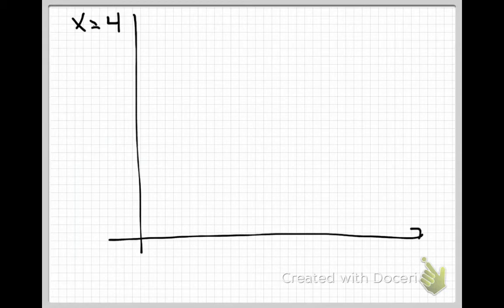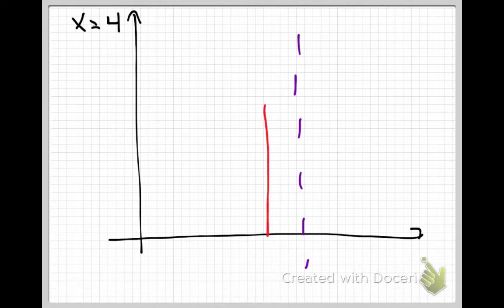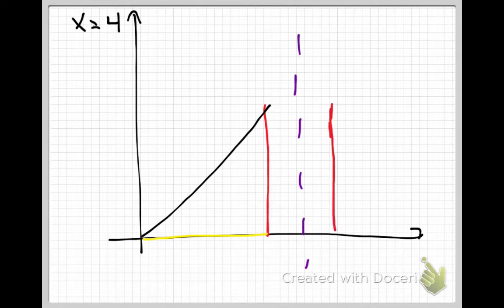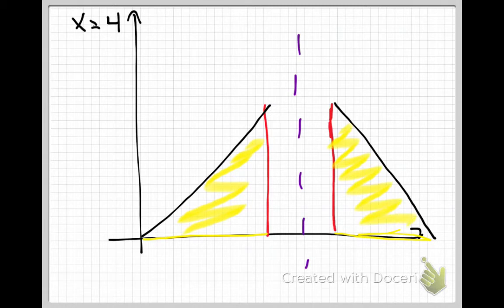Now we're rotating around the line x equals 4. This is one where the regions don't really connect — the original triangle is floating away from the line of rotation. I'll draw the line of rotation first, with x equals 3 here, y equals 2x, and y equals 0. We're one unit over from x equals 4. When we make a cut, this has to be a dy problem because we're slicing perpendicular to the y-axis to get a washer.